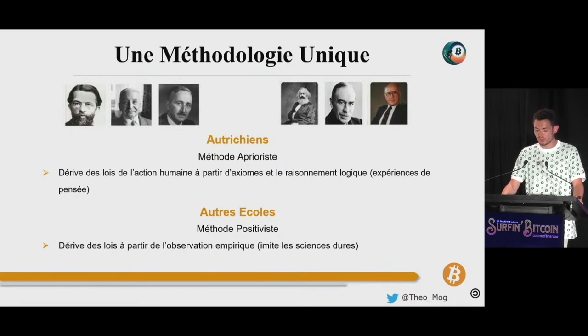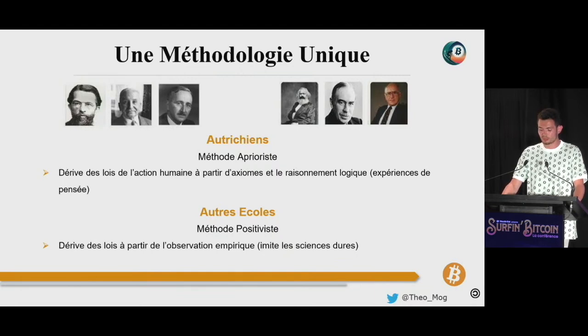Dans une telle situation, c'est finalement le biais idéologique, l'orthodoxie à la mode, le consensus corporatiste, qui serviront de critères de tri et de colonne vertébrale au modèle. Aussi, il n'est pas étonnant de constater que la science économique ressemble de plus en plus à un clergé chargé de justifier l'idéologie dominante.